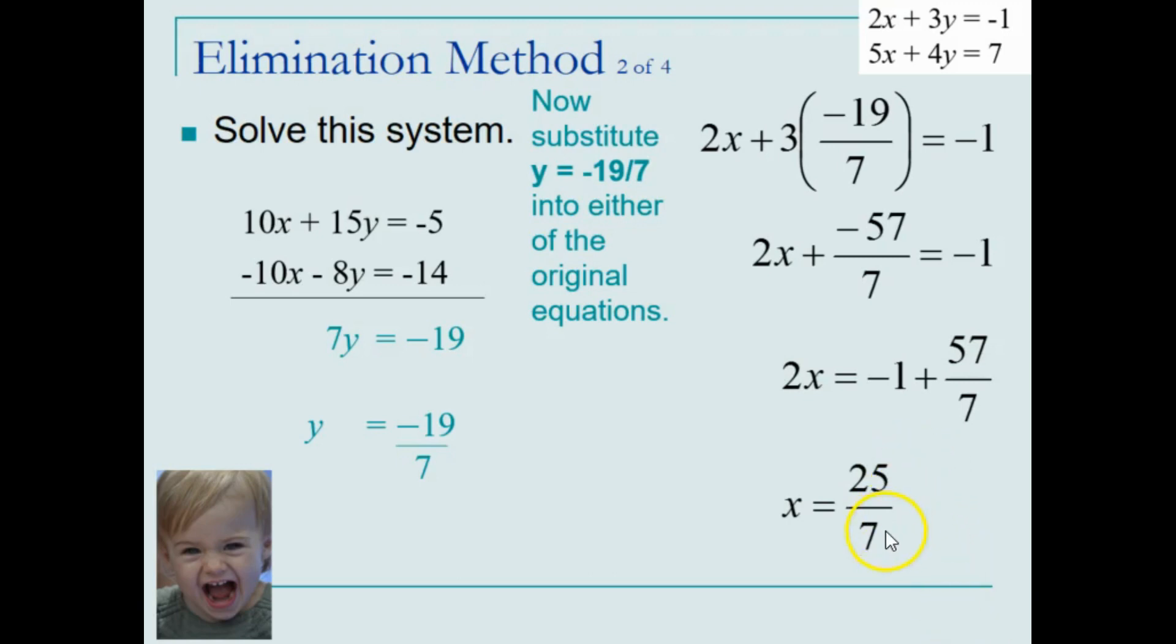So the solution to this system would be the ordered pair 25 sevenths, negative 19 sevenths, being sure that we put the x coordinate first followed by the y coordinate.